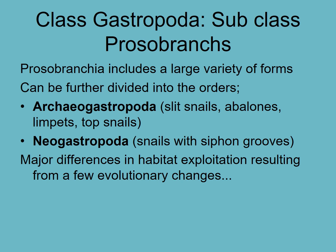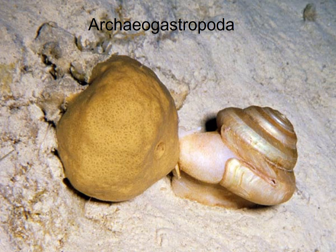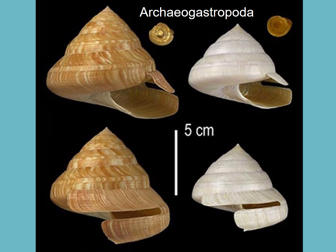We've got the archaeogastropods — archaeo being old — and neogastropods, which is new gastropods, which are snails with siphons. So let's have a look at how these things differ. Here's an archaeogastropod. You can see the slit — it's a slit shell — feeding on a sponge in deep water.